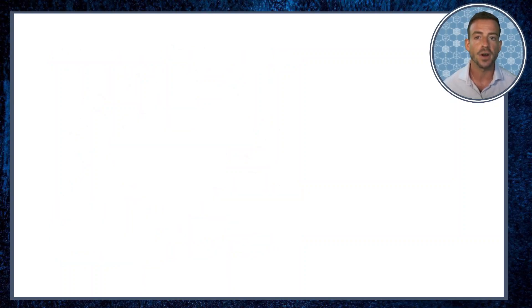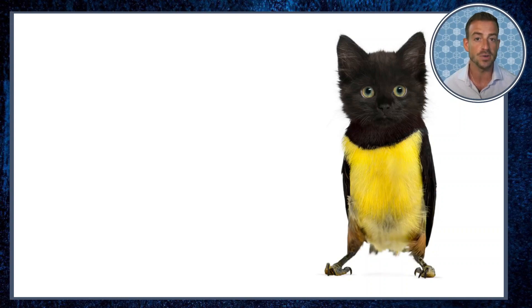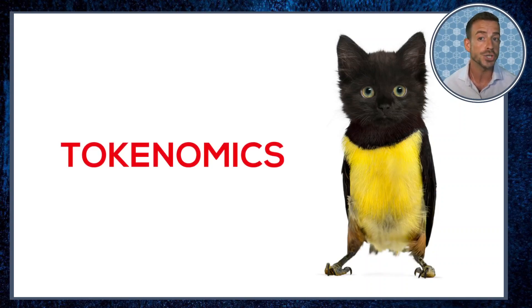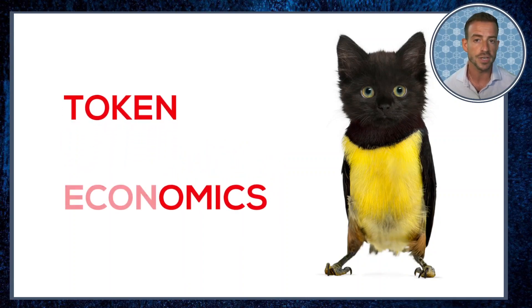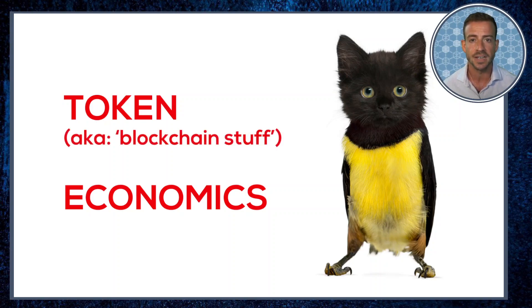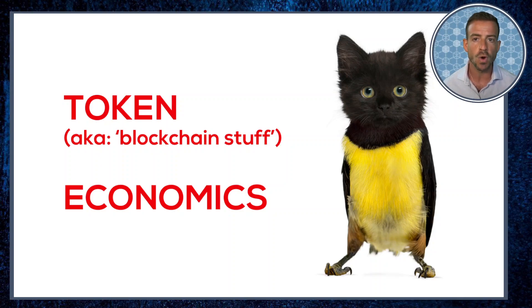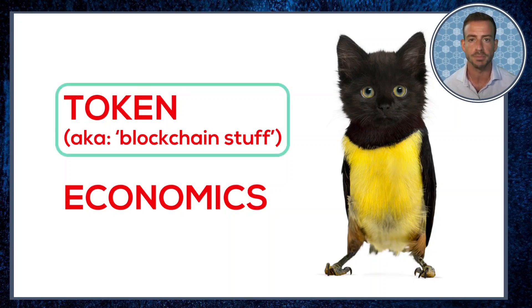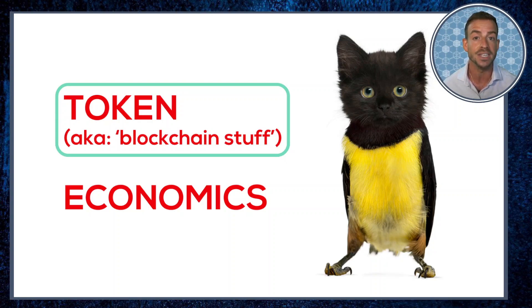Let's start by stating the obvious: tokenomics is a portmanteau — a smush of two pre-existing words, token and economics. That tells us that this new word draws on definitions of both these terms, and often the token part is used as a general stand-in for blockchain stuff. When you look at a definition for tokenomics on the internet, most of what you get leans into this token or blockchain part. This is not inaccurate — it helps us get going — but I don't think that is the most helpful way to scope out our field.